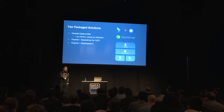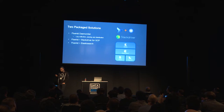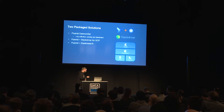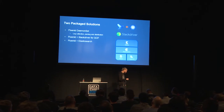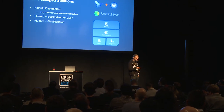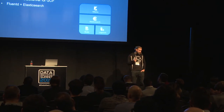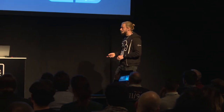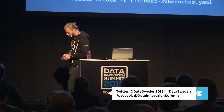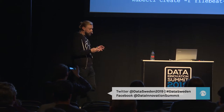Kubernetes doesn't specify the logging solution to use, but it comes with two packaged solutions: Stack Driver for those running on Google Cloud Platform, and Elasticsearch as the logging back end for other distributions. Both alternatives use a logging agent called Fluentd to collect, parse, and distribute logs. Fluentd is great, but we say that Filebeat is better. Filebeat is also a logging agent that collects logs.